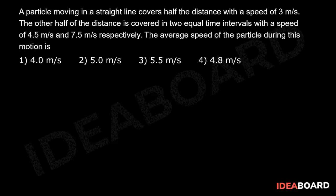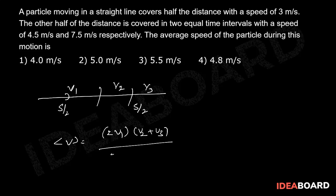Suppose a particle moving in a straight line covers half the distance with velocity v1 and the remaining half distance is split: half the time with velocity v2 and remaining half time with velocity v3. Then the average velocity equals 2v1 into (v2 plus v3) divided by (2v1 plus v2 plus v3).